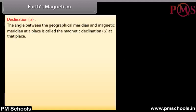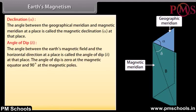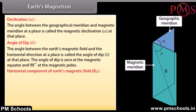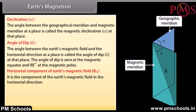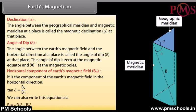Declination (α): The angle between the geographical meridian and magnetic meridian at a place is called the magnetic declination at that place. Angle of dip (δ): The angle between the Earth's magnetic field and the horizontal direction at a place is called the angle of dip. The angle of dip is 0° at the magnetic equator and 90° at the magnetic poles. Horizontal component of Earth's magnetic field (BH): tan δ = BV/BH, and B = √(BH² + BV²).